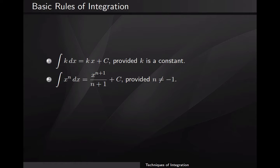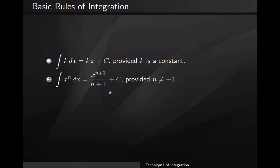The power rule for integration: the integral of x to the n dx equals x to the n plus one, divided by n plus one, plus the constant of integration. You add one to the exponent and then divide by that same exponent n plus one. The restriction is that n cannot be negative one, because if it were, you would have division by zero in the denominator.